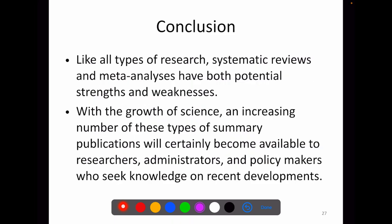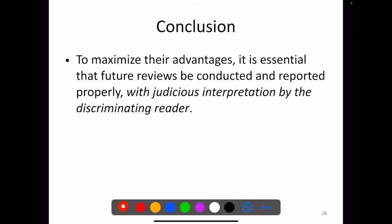To conclude, like all types of research, systematic review and meta-analysis have both potential strengths and weaknesses. With the growth of science, an increasing number of these summary publications will become available to researchers, administrators and policy makers. To maximize their advantages, it is essential that future reviews be conducted and reported properly with judicious interpretation by the discriminating reader, who should be equipped to identify the goods and bads of a meta-analysis.